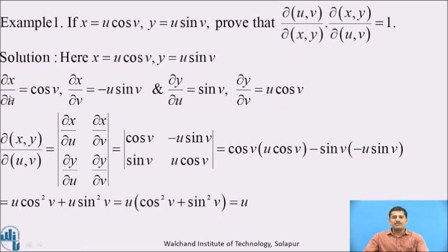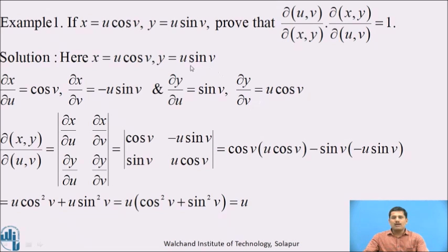Differentiating x partially with respect to u, treating v constant, cos(v) is constant and the derivative of u with respect to u is 1, so ∂x/∂u = cos(v). Differentiating x partially with respect to v, treating u constant, we get ∂x/∂v = −u·sin(v). Differentiating y partially with respect to u, treating v constant, ∂y/∂u = sin(v). And the partial derivative of y with respect to v, treating u constant, gives ∂y/∂v = u·cos(v).